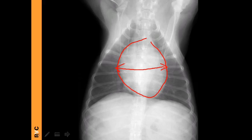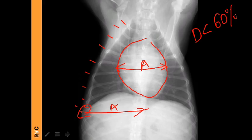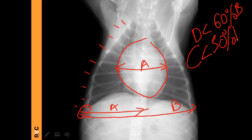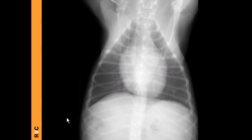On the VD/DV view, the cardiac silhouette measurement: measure the maximal width of the cardiac silhouette, then go to the ninth rib level and compare. In the dog, the maximal width of the heart at the level of the ninth rib should be less than 60% of the width of the chest. In the cat, it should be less than 50% of the chest width at the same level.